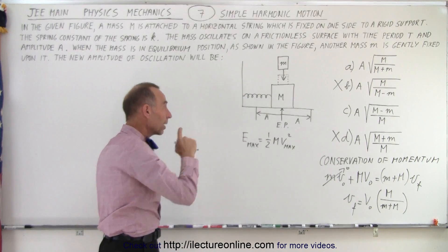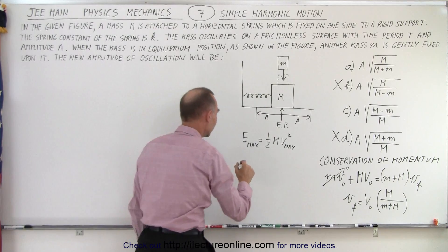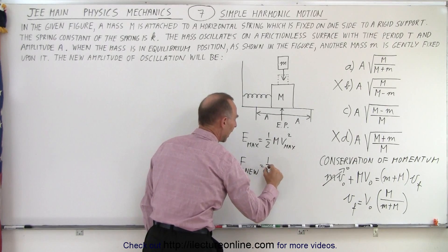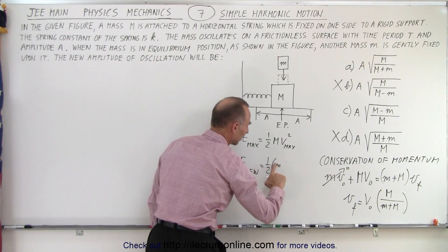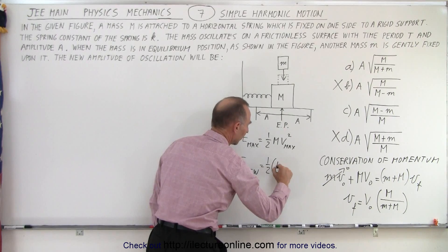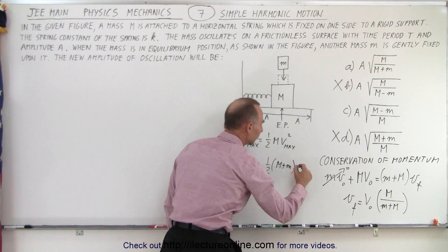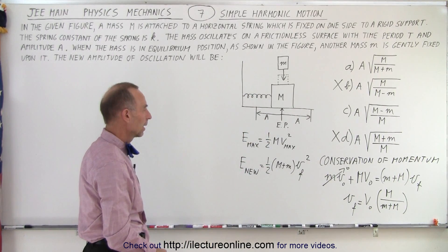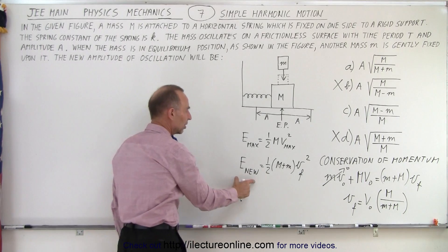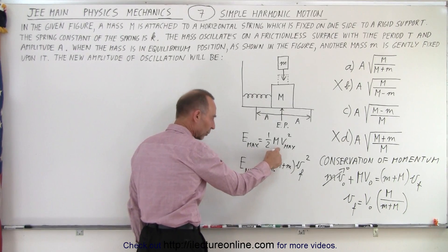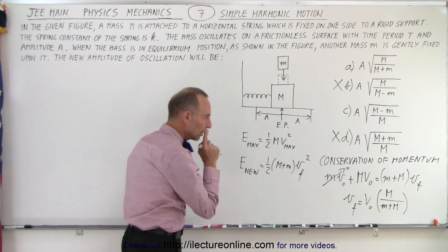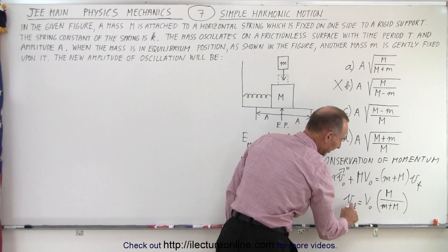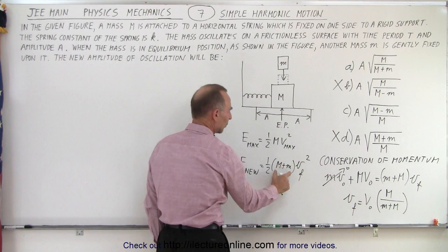Once you put the small block on top of it, what happens now is that E new is going to be equal to one half the new mass, which is m plus m, and let me write the big M first, big M plus small m times V final squared. So we know that the new energy, which is going to be less than the maximum energy we started with, is going to be equal to this. We end up with a smaller velocity, because notice that this is a fraction smaller than one. And we end up with more mass.